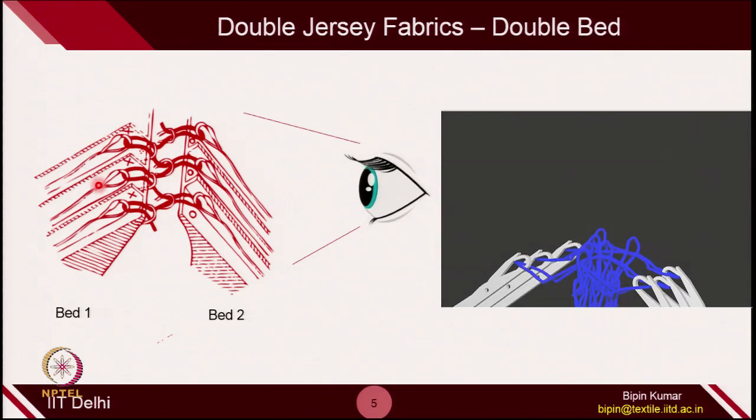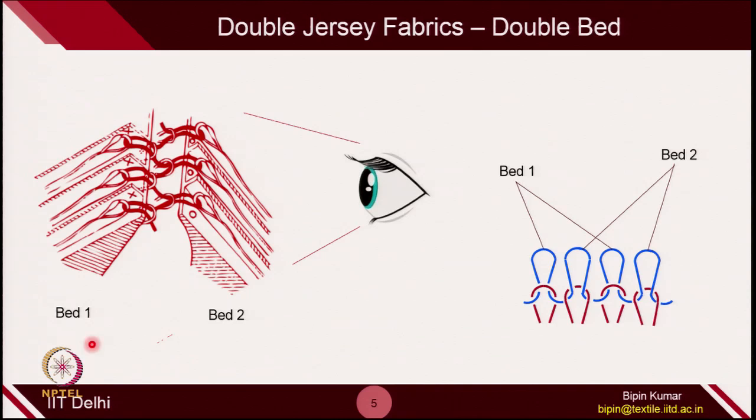So in the same course, with respect to the standing position of the observer, bed number 1 is creating technical back loops and bed number 2 is creating technical front loops. These 2 beds are simultaneously in operation for creating both technical front and back loops. This is how the principle of double jersey formation takes place in a double bed machine.